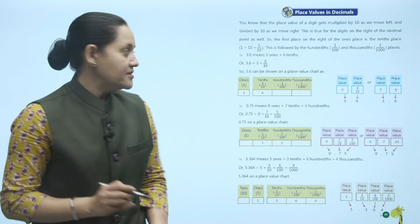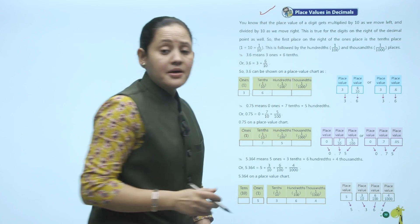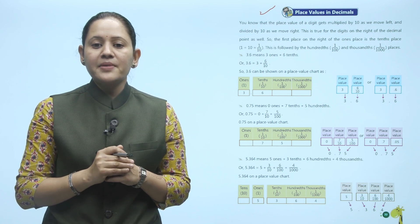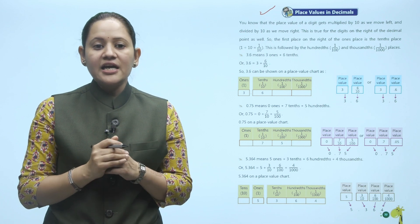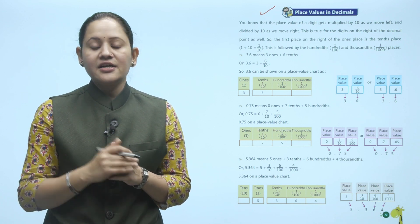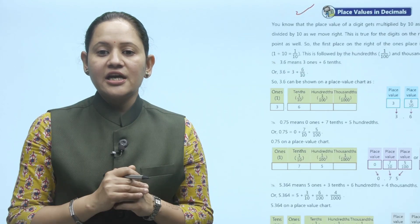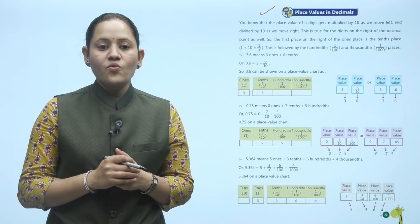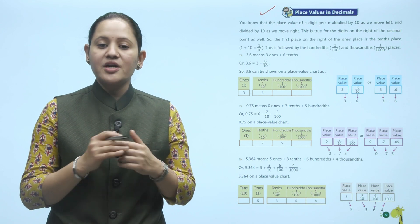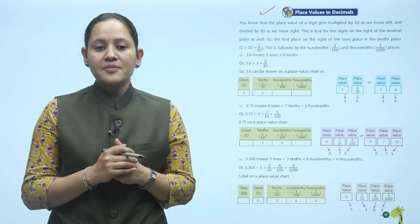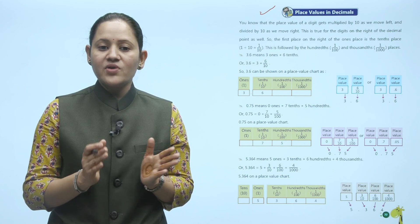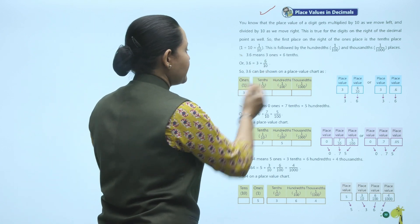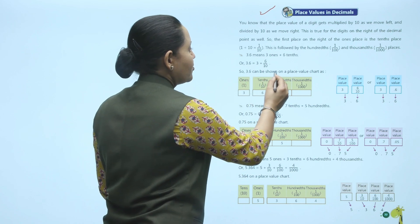Next is place value in decimals. The place value of digits gets multiplied by 10 as we move left and divided by 10 as we move right. This is true for digits on the right of the decimal point as well. The first place on the right of the ones place is the tenths place (1 upon 10), followed by hundredths (1 upon 100), and thousandths (1 upon 1000). For example, 3.6 means 3 ones plus 6 tenths, written as 3 plus 6 upon 10.